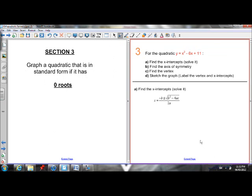Graphing with 0 roots. We know a parabola has 0 roots if the discriminant, if the b squared minus 4ac, if that equals a negative number. Because we can't take the square root of a negative number.